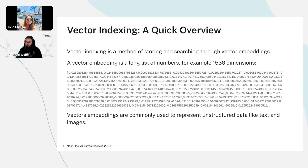Vector indexing in GraphQL — a quick overview. Vector indexing is a method of storing and searching through vector embeddings. A vector embedding is a long list of floating point numbers. Here's a very small example on screen, it's actually a lot shorter than the real one. The real one is 1,536 dimensions, which can be considered a small amount of dimensions actually. Vectors are commonly used to represent unstructured data like text and images.